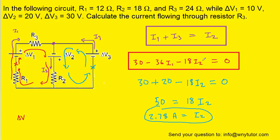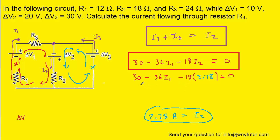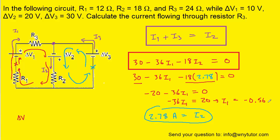Now that we have I2, we substitute it into the earlier equation to solve for I1. Substituting: 30 minus 18 times 2.78 minus 36I1 equals zero, which gives us negative 20 minus 36I1 equals zero, so I1 equals 20 divided by negative 36, which is approximately negative 0.56 amps. The negative sign means we chose the wrong direction for I1, so we update the figure to show the current flowing in the opposite direction.